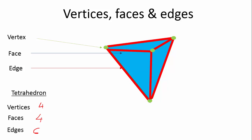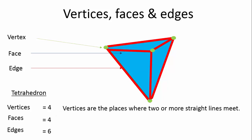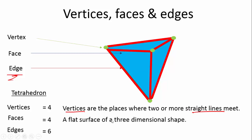Remember, this is your tetrahedron — four faces, four vertices, and six edges. Now, vertices are places where two or more straight lines meet. A vertex is a place where two or more edges meet. A face is a flat 2D surface of a three-dimensional shape.